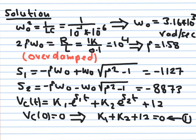Computing the values: ω₀² = 1/LC where L = 10⁻¹ H and C = 10⁻⁶ F, giving ω₀ = 3.16 × 10³ rad/s. Also, 2ζω₀ = R/L = 1000/0.1 = 10⁴. Solving for ζ gives ζ = 1.58. Since ζ > 1, this is the overdamped case, and we expect two distinct real natural frequencies.